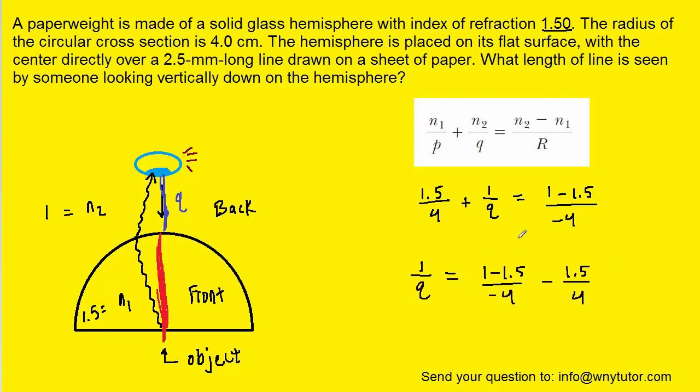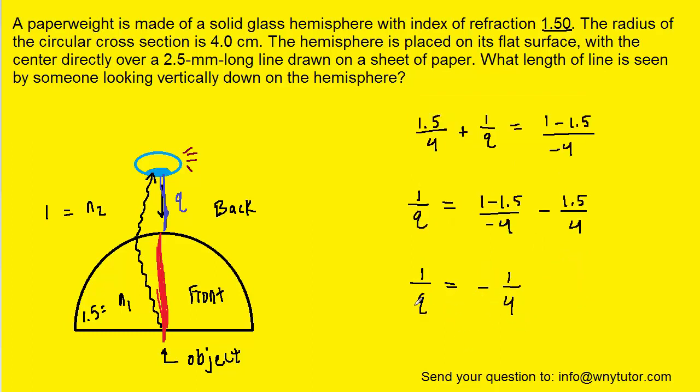We can then pick up our calculators and compute this value on the right side. We could then invert both sides of the equation, so the left side would become q over 1, which is just q, and the right side would become negative 4 over 1, which is just negative 4. So the image distance, q, turns out to be negative 4 centimeters.